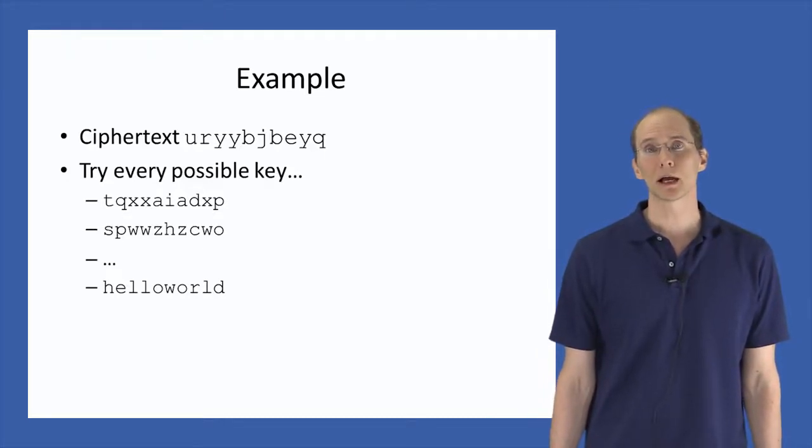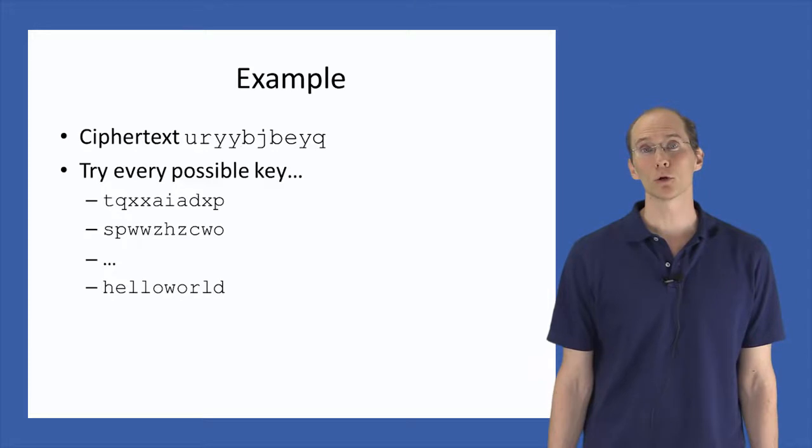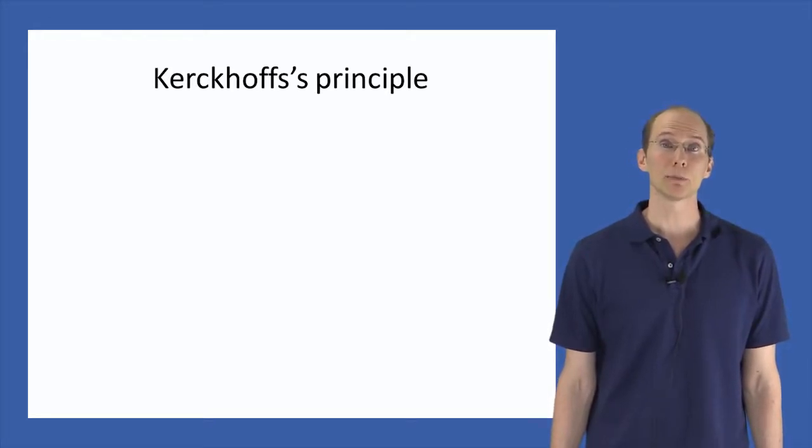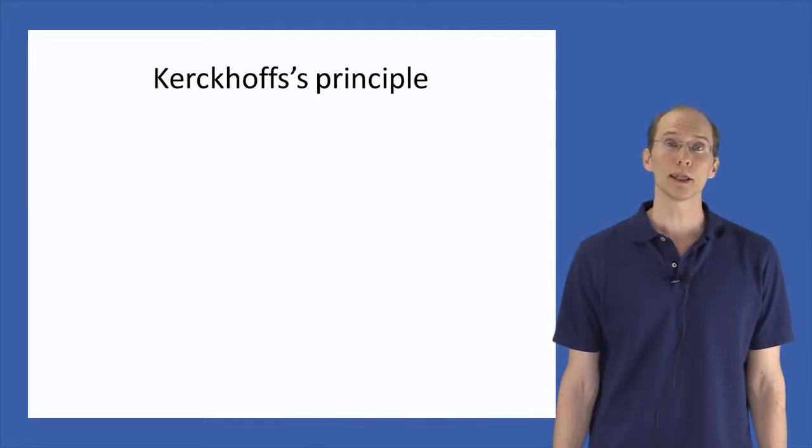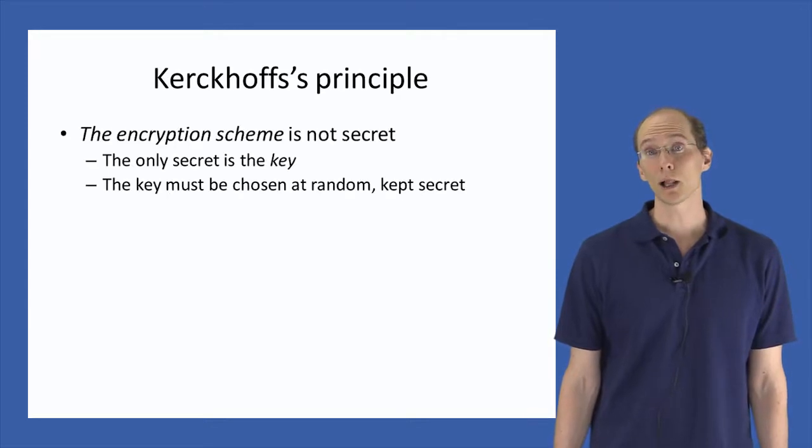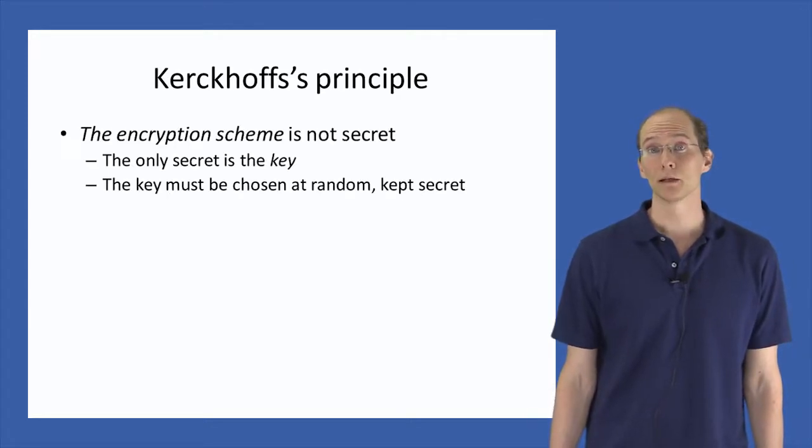Something implicit in the attack I just described is that the attacker is assumed to know the encryption scheme the communicating parties are using. This is known as Kirchhoff's Principle, which states that the encryption scheme being used is not to be considered secret, but instead the only secret information is the key shared by the parties. This implies that the key must be chosen randomly. If not, then the attacker knows it. And furthermore that this key must be kept secret by the parties sharing that key.